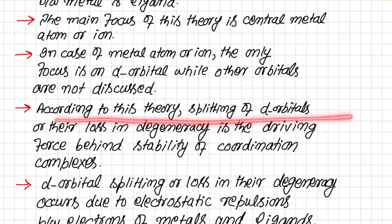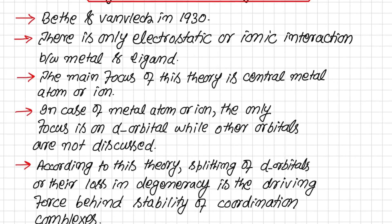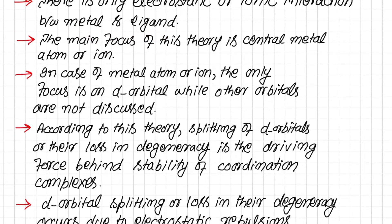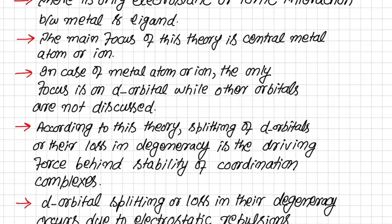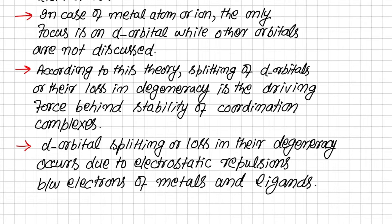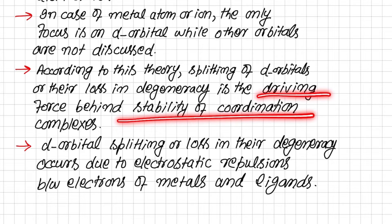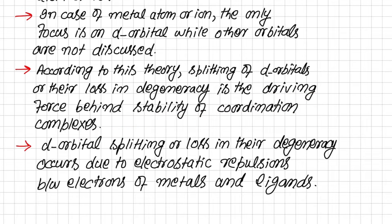According to this theory, splitting of the d orbitals — or loss of their degeneracy — is the driving force behind the stability of coordination complexes. When ligands approach the metal closely, the d orbitals of the metal split: some orbitals go high in energy and some go low in energy, resulting in an overall loss of degeneracy.